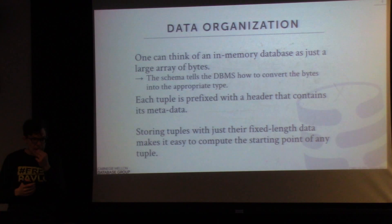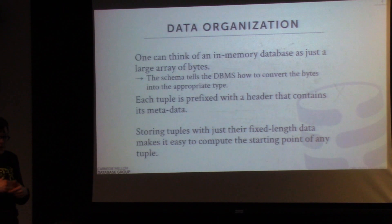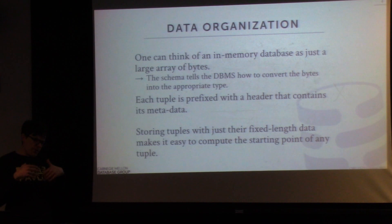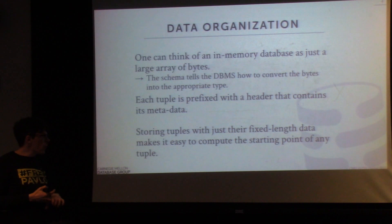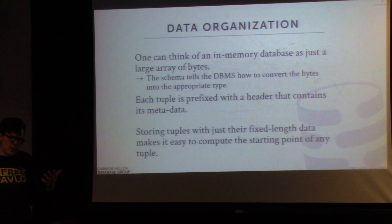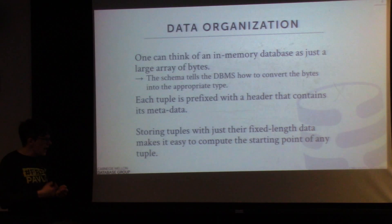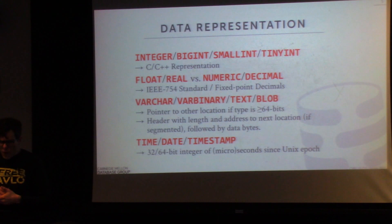Because we always store tuples in fixed-length data blocks, it's really easy to jump to whatever tuple we need. We know exactly what size each tuple will be, so if we want the fifth tuple, we take the starting memory address for the block and multiply by the length of the tuple plus the header delta. This is essentially the same as what a disk-based database system does — it manages pages moving in and out of disk; in our case, we manage in-memory blocks.